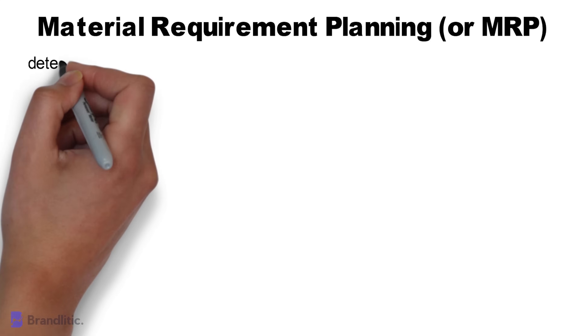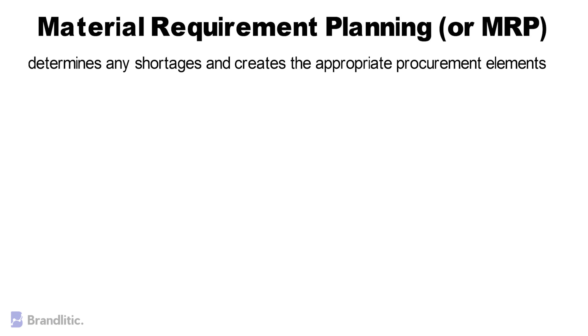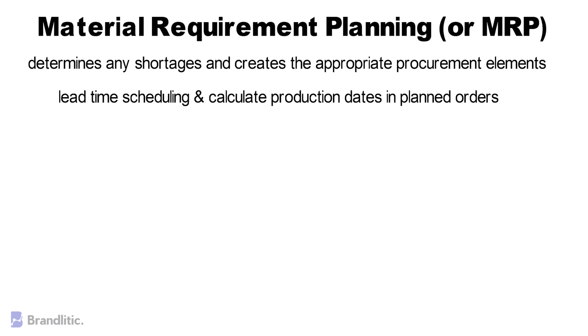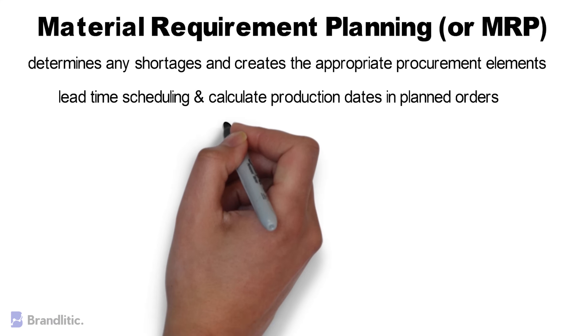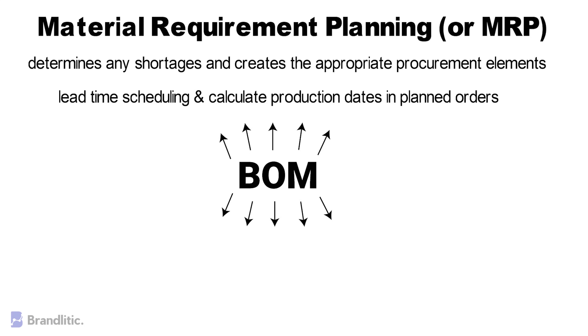Let's discuss material requirement planning, or MRP, in SAP PP. Primarily, MRP determines any shortages and creates appropriate procurement elements in the system. It performs net requirement calculations and generates planned orders for in-house produced materials and purchase requisitions for raw material. It also performs lead time scheduling and calculates production dates in planned orders. Lastly, it explores the BOM and generates procurement proposals at each BOM level.